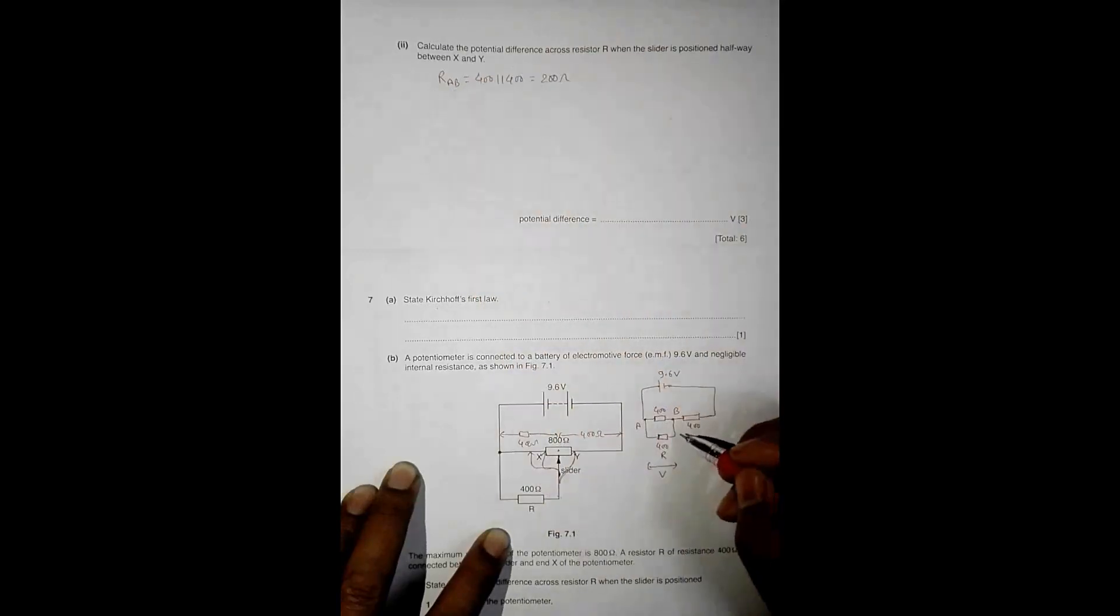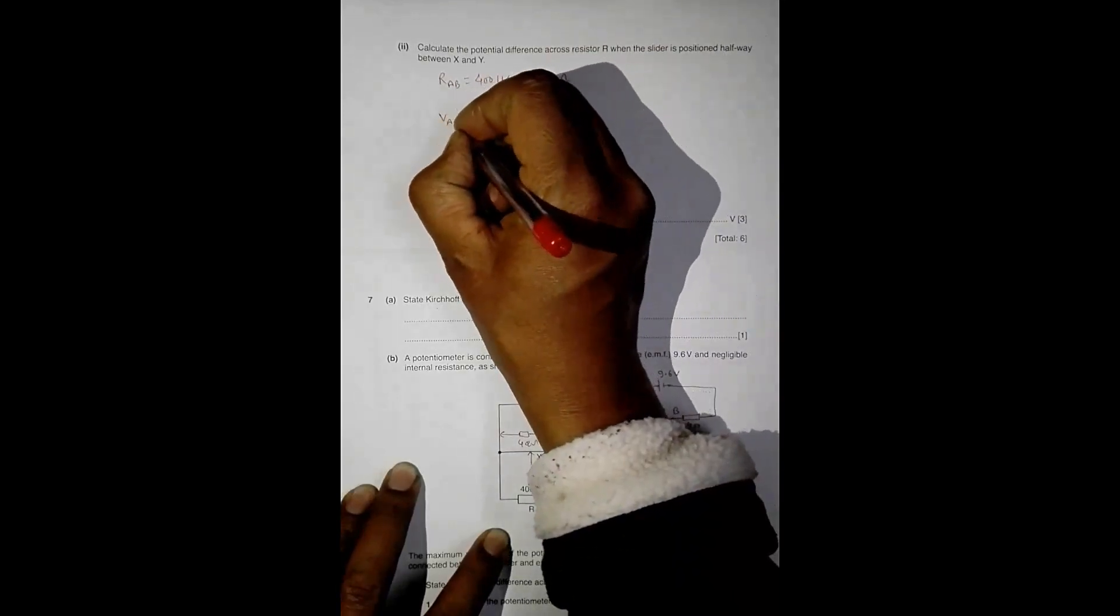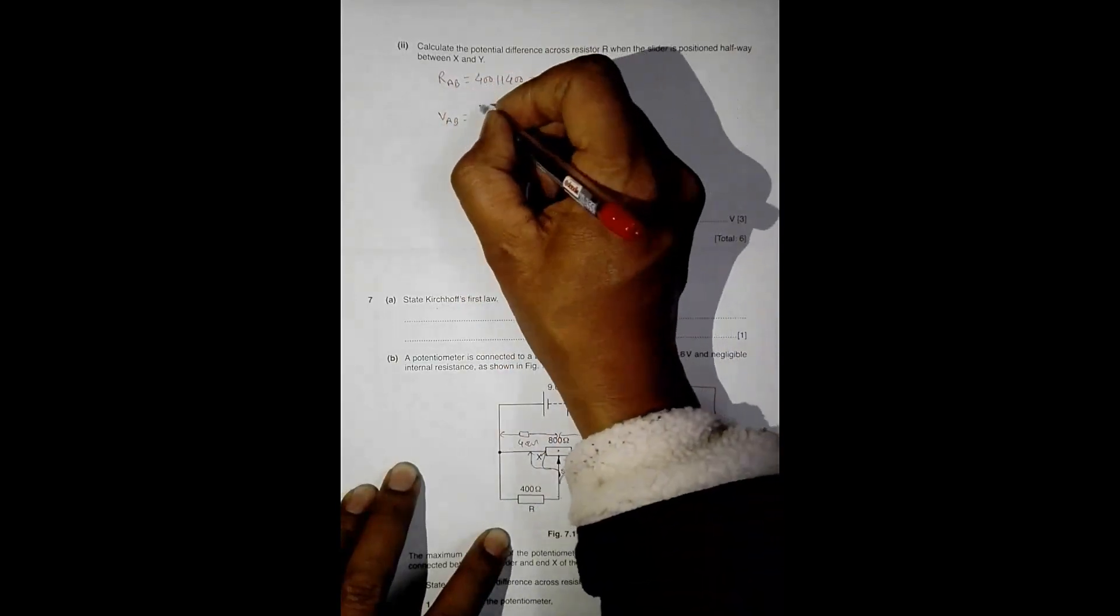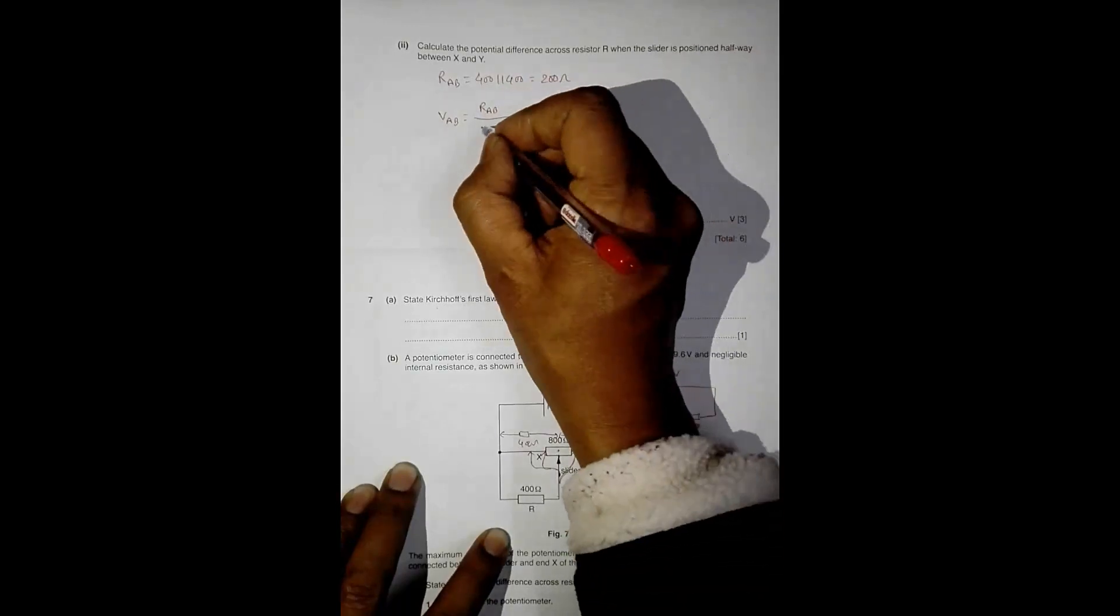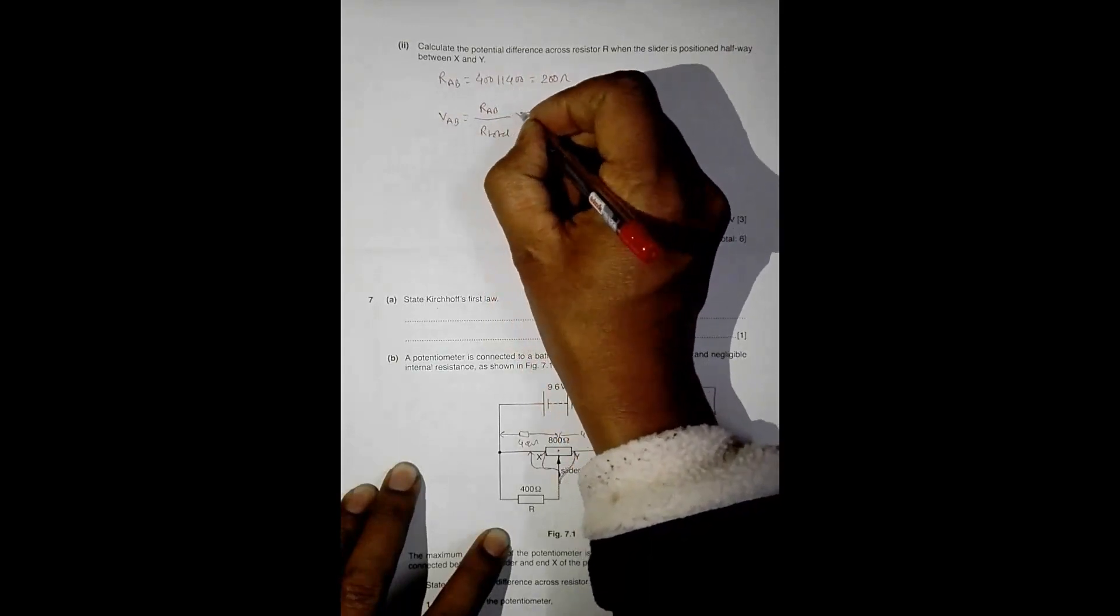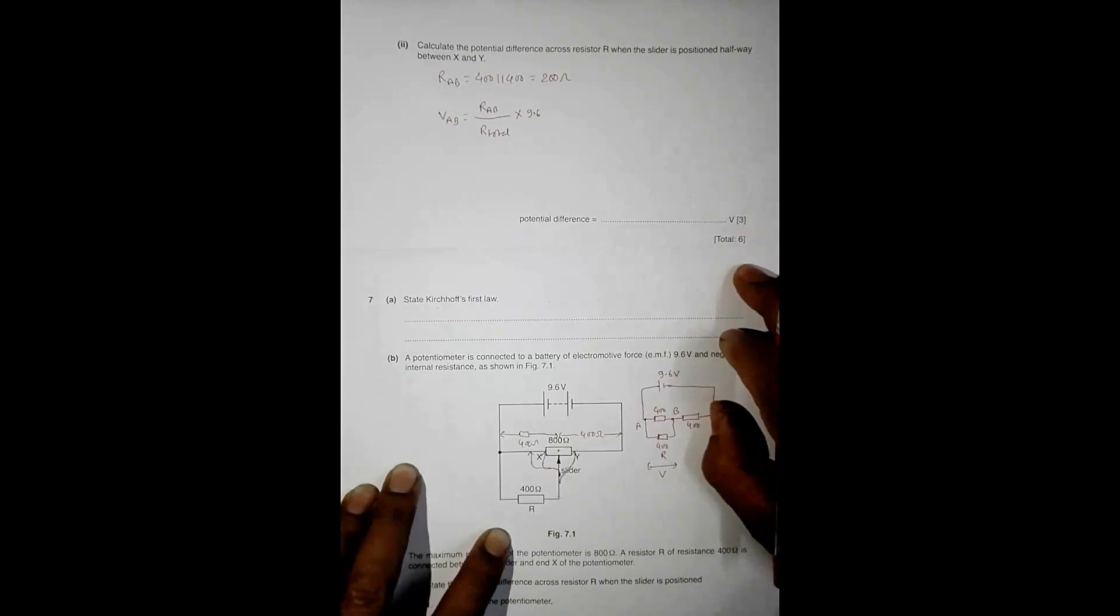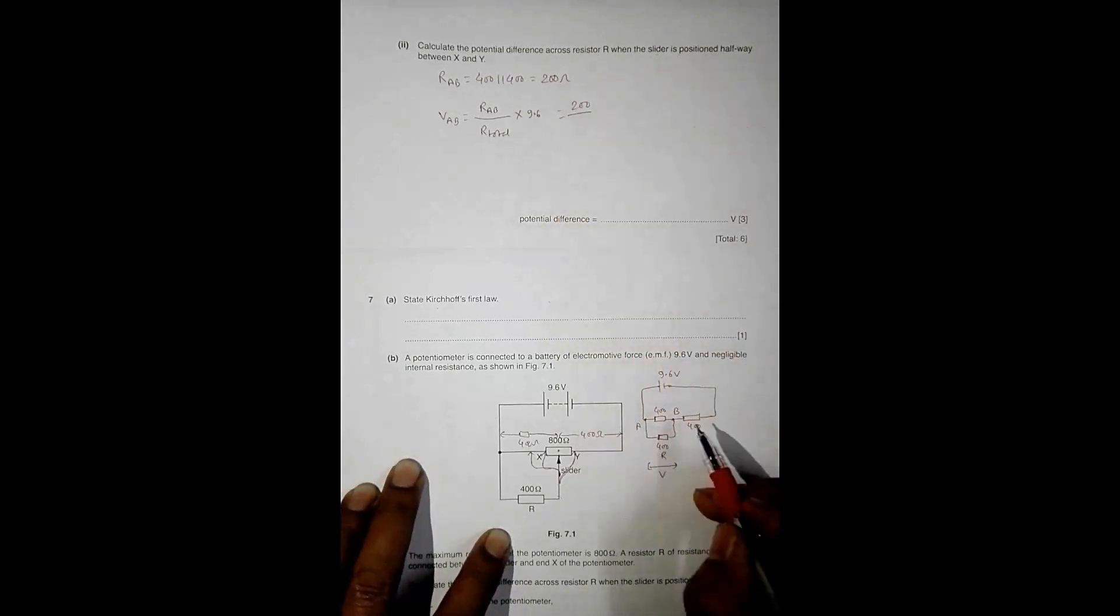Therefore V_AB should be equal to R_AB divided by R_total into E, which is 9.6 volts. This is the regular voltage divider formula. So equal to, this R_AB is equal to 200, and the R_total is equal to, this is 200 and this is 400, so it is 200 plus 400 into 9.6.